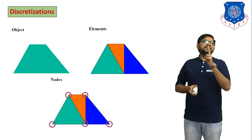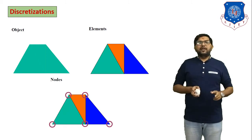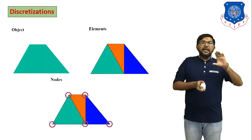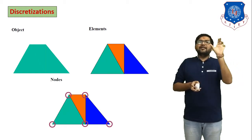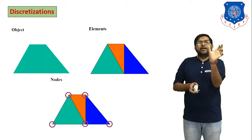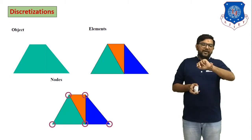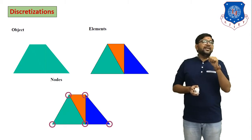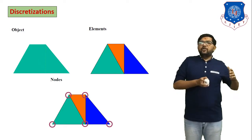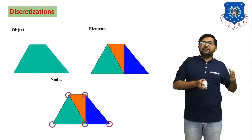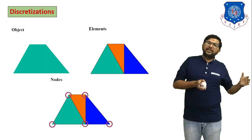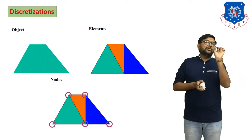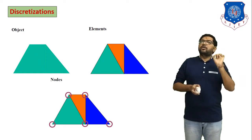Second definition is Element. If you divide any object into a number of parts, each part of that object is considered as one element. Third definition is Node. When you divide any object into a number of parts, elements are generated. Each element is connected at some particular point, and that point is known as a Node.